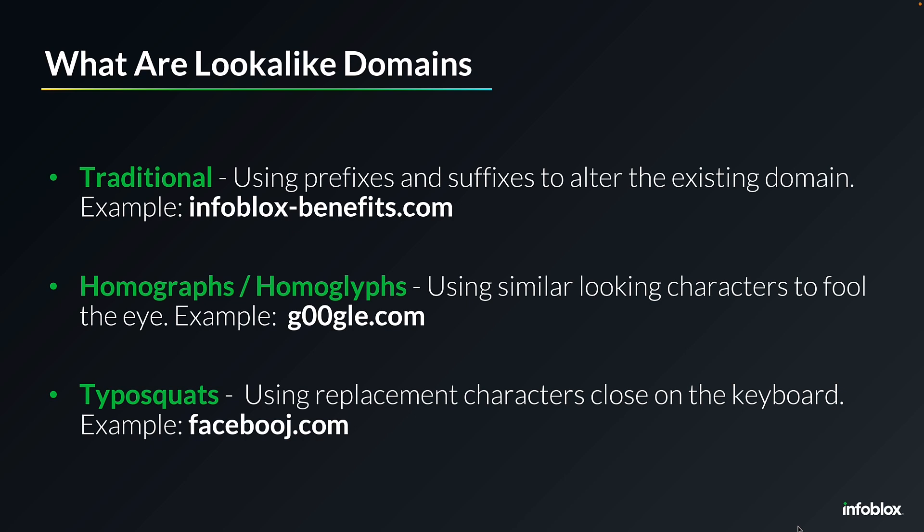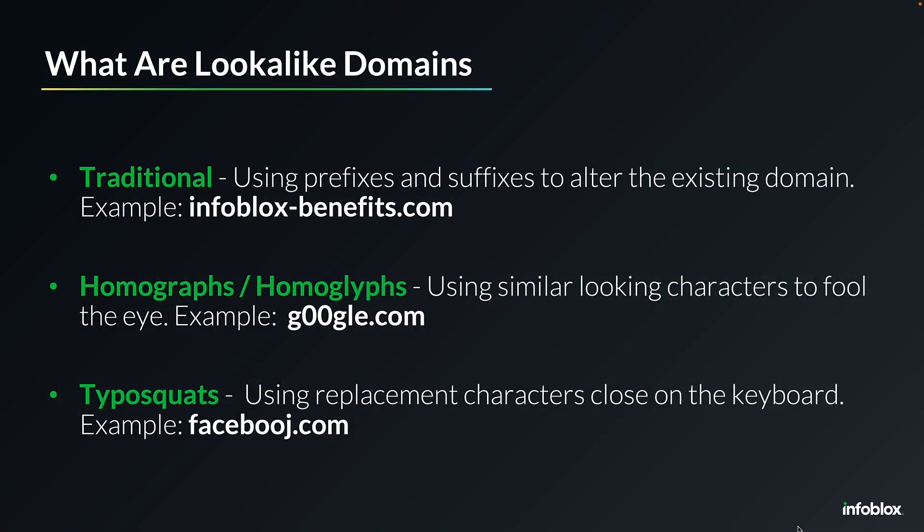Finally, there's a category called typosquats. This is not so much trying to fool you visually, but to take advantage of common misspellings. Maybe you're trying to type Facebook and your finger slips — instead of hitting K, you hit the key right next to it, which is J. You even thought you were going to the right place, but they're going to take advantage of that. Each one of these is a different technique used to fool you into believing you're interacting with a trusted environment.